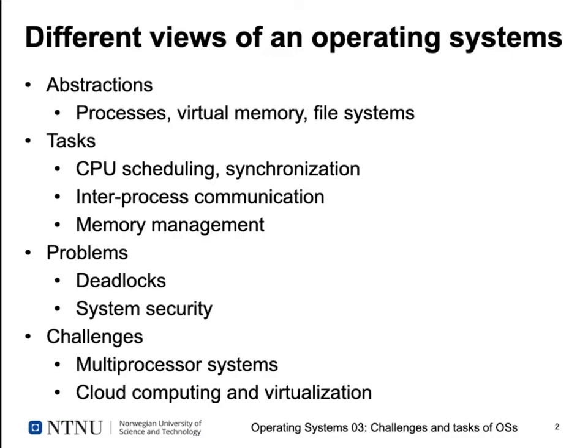New hardware also gives us upcoming challenges. Multiprocessor systems are not new but they're ubiquitous now, even in very small systems. We have to enable our operating system to work with more than one processor and use this hardware efficiently. And of course we have large installations like cloud computing systems distributed over the internet, where we want technologies like virtualization to use large amounts of servers efficiently and share them among many different applications.